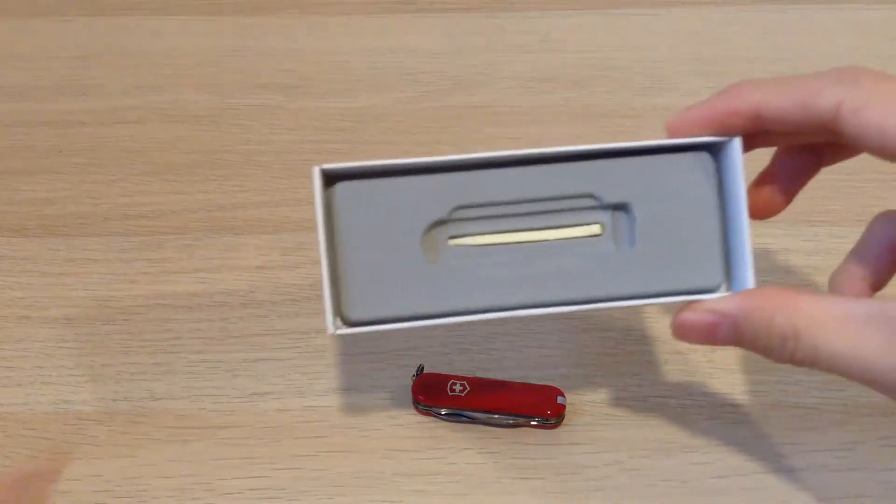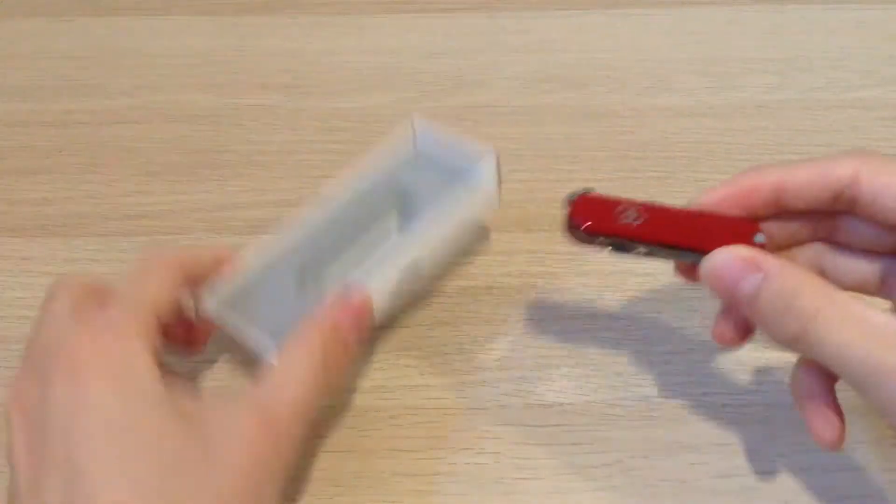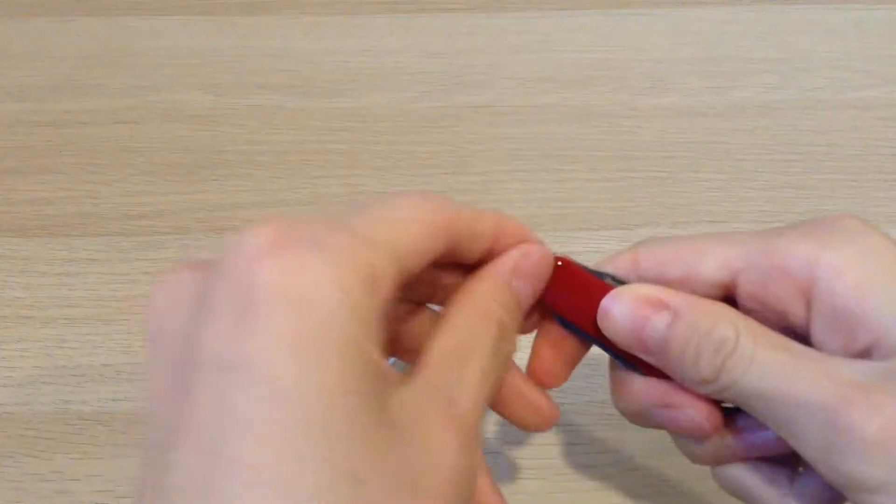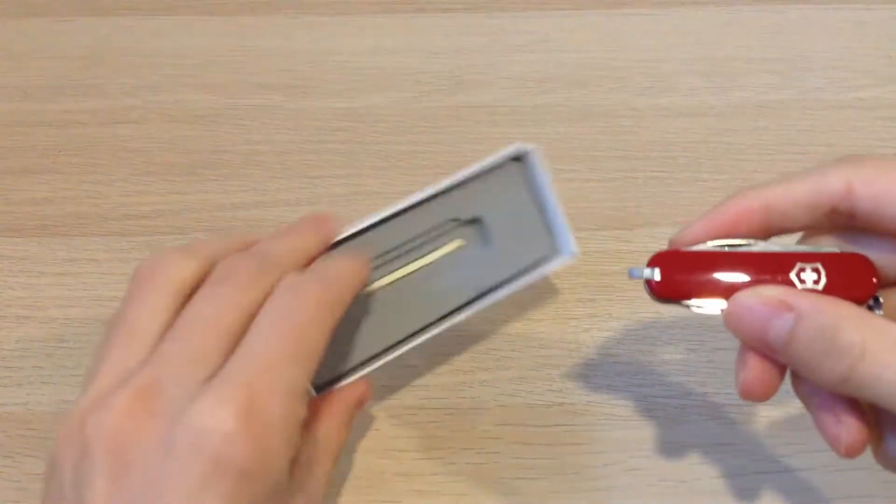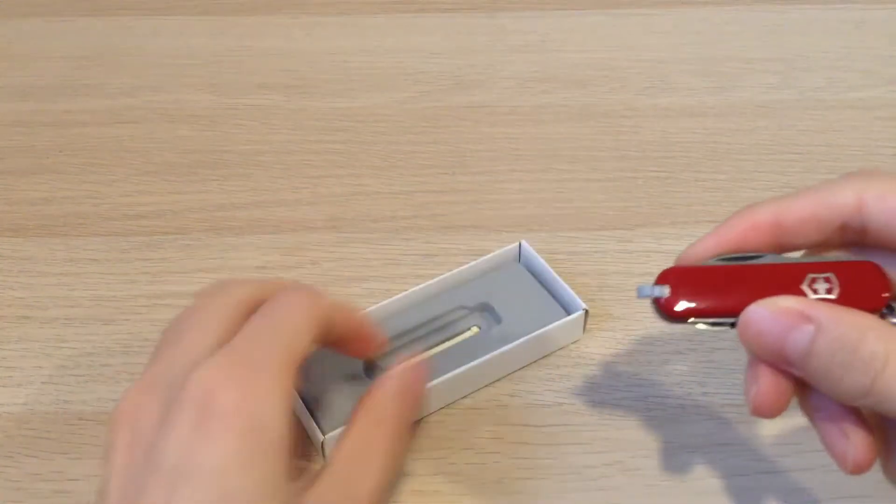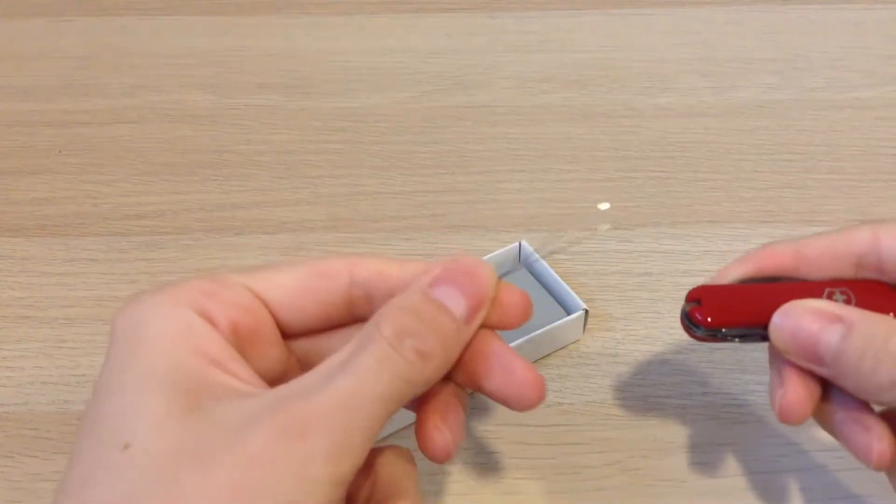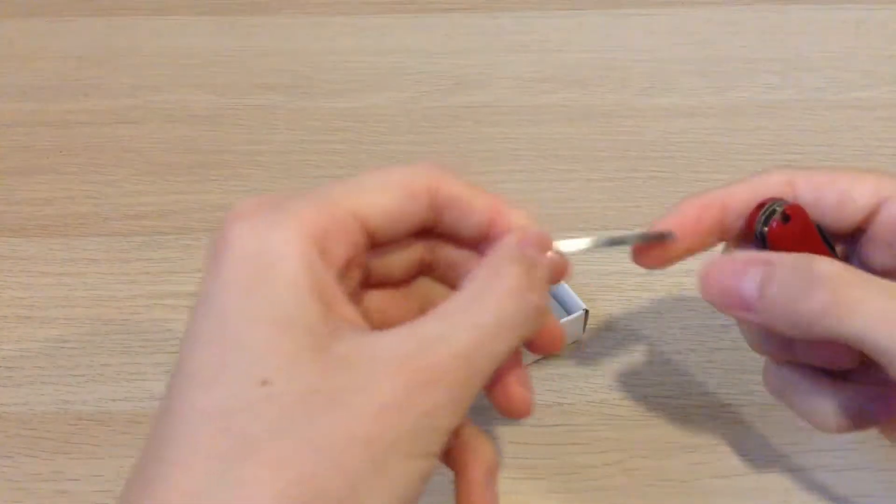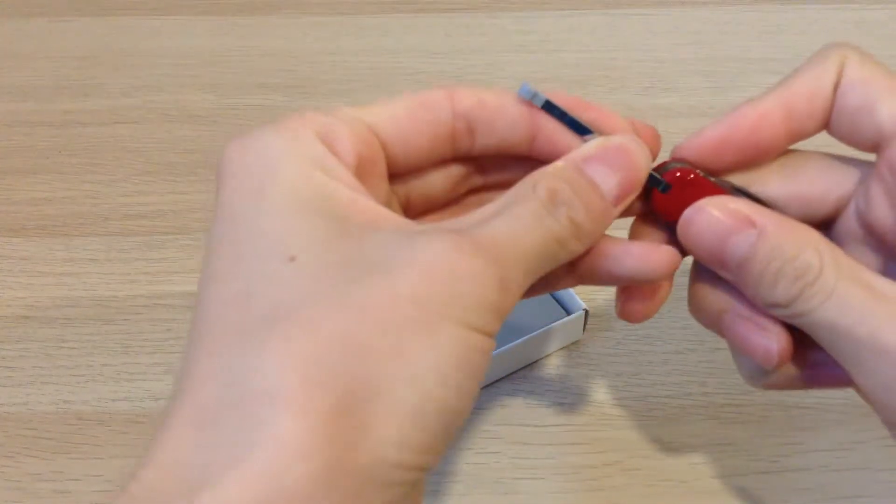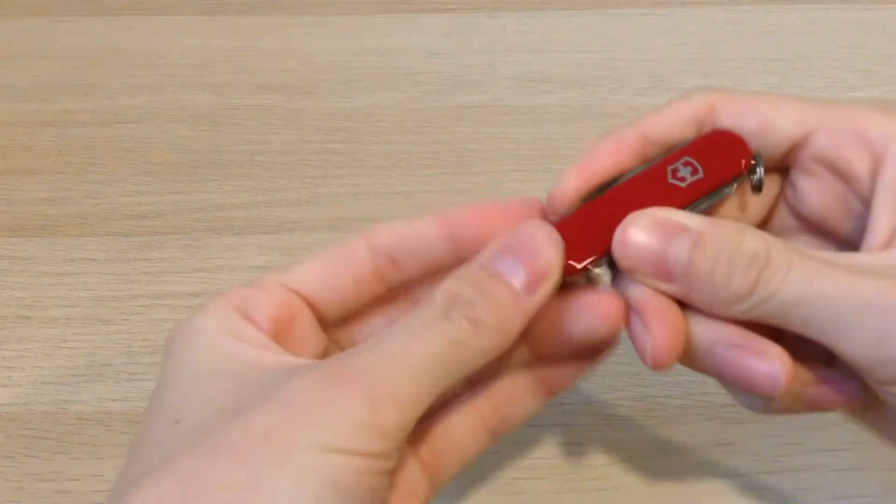It also comes with a toothpick because this one only has one slot for a small pick. But the standard one it comes with is a set of tweezers. I don't really use a toothpick so I'll probably just leave that in the box.